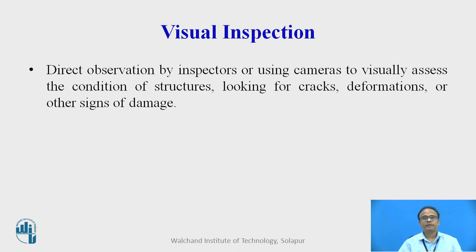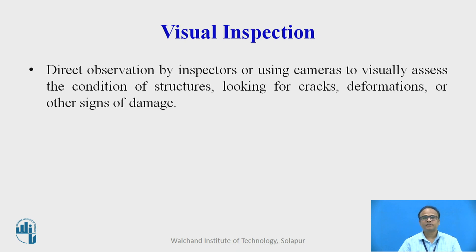Visual inspection. Whenever we go to the site, we observe what are the defects in the structure like corrosion, cracks or spalling of concrete. Direct observation by inspectors or using cameras to visually assess the condition of structures, looking for cracks, deformations or other signs of damage like corrosion or spalling of concrete.